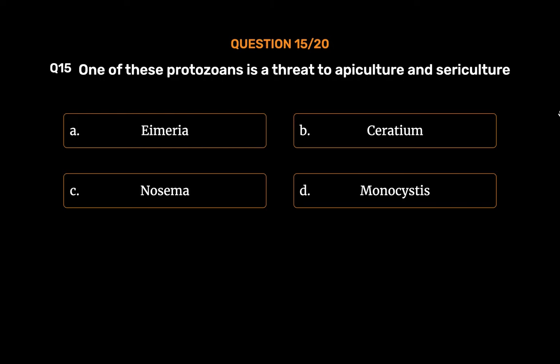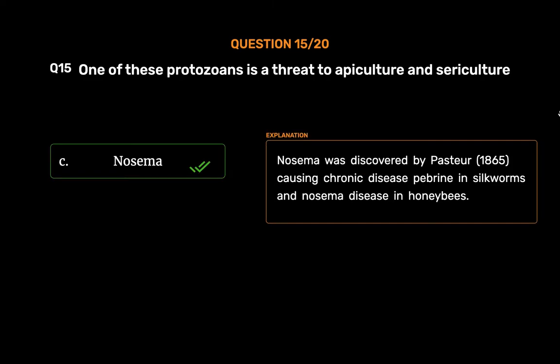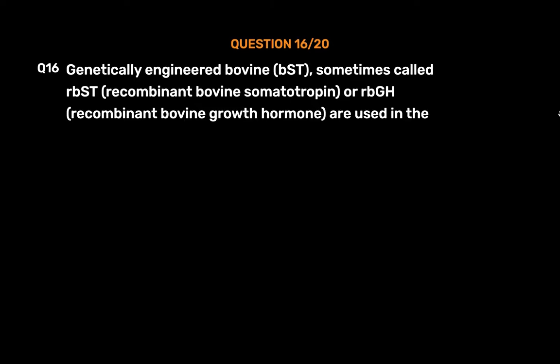The correct answer is Option C: Nosema. Nosema was discovered by Pasteur in 1865, causing chronic disease pebrine in silkworms and Nosema disease in honeybees.